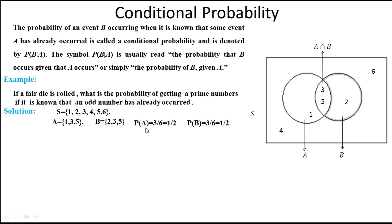The probability of A is equal to three by six, because there are three outcomes in A and the total number of outcomes in the sample space is six, so P(A) equals three by six which equals one by two. Similarly, the probability of B is also equal to three by six, which equals one by two.